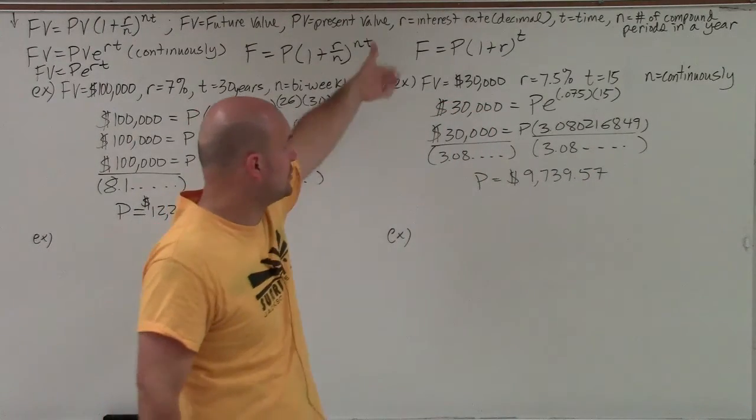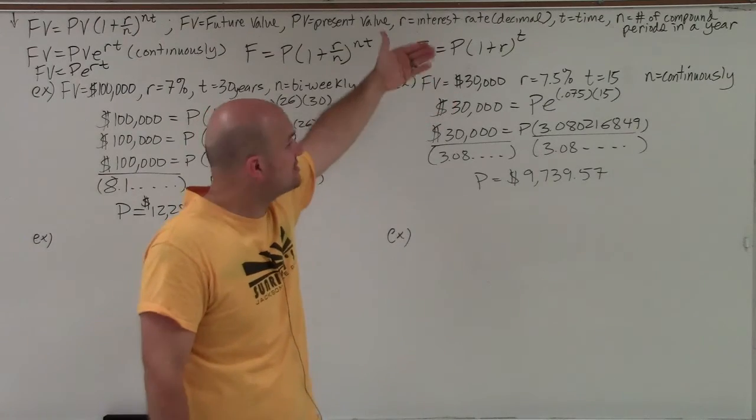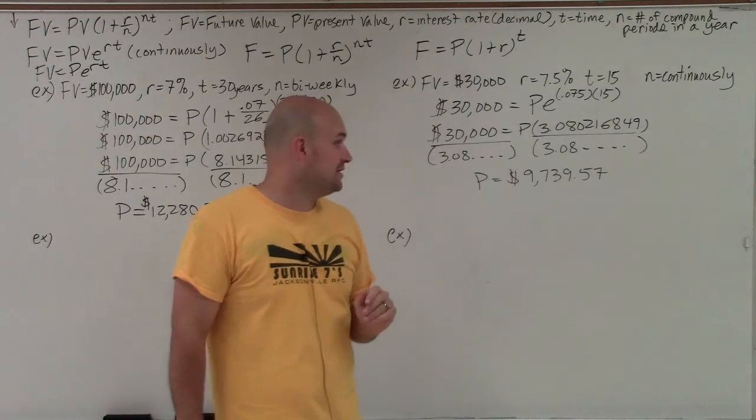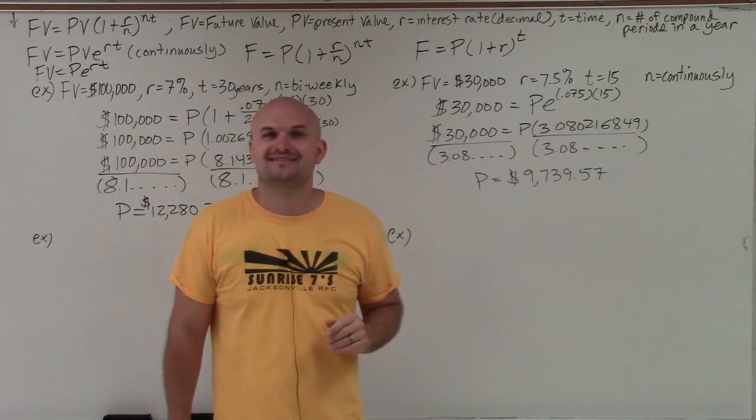So basically, if I want to earn $30,000 at the end of 15 years, compounding continuously at a rate of 7.5%, I need to invest $9,739.57. Thanks.